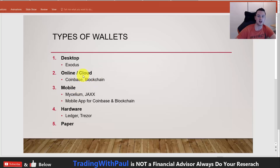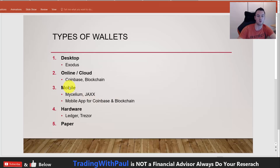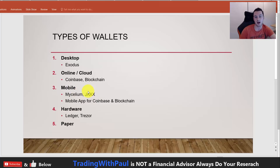With online wallets you can access them from anywhere you have a browser. You can also access them on mobile — there is a mobile app for both Coinbase and blockchain.info. Other mobile wallets are Mycelium and Jax. Jax also has a desktop version. I don't personally use either of those two, but they are very popular and stored on your phone.